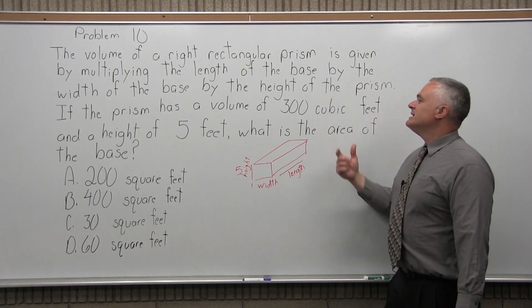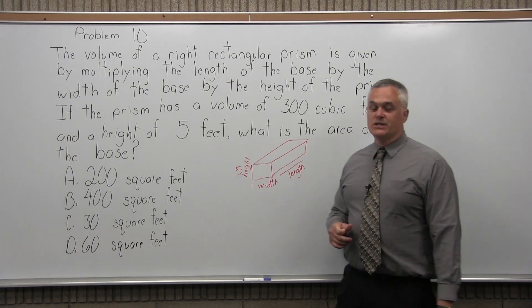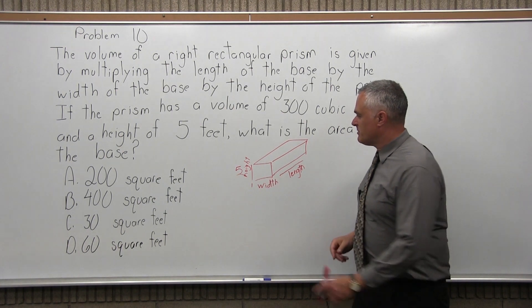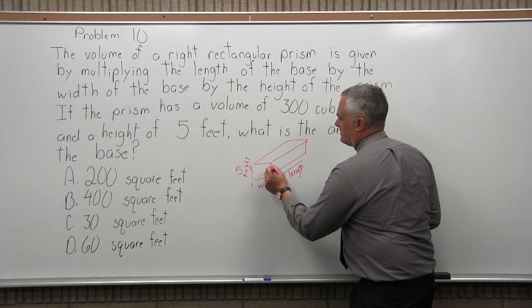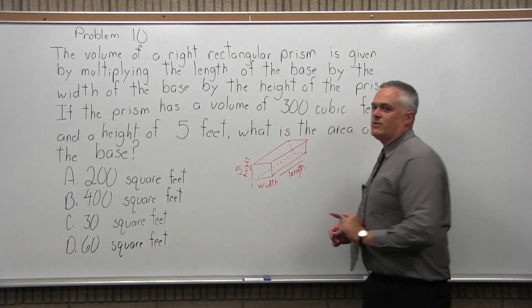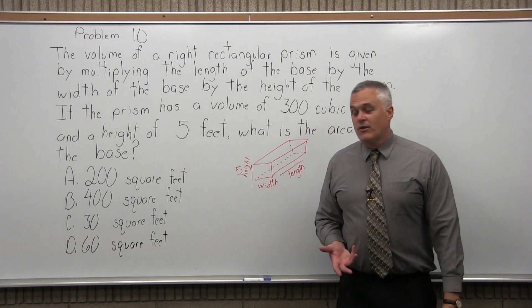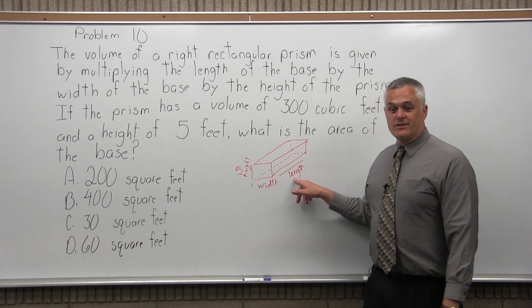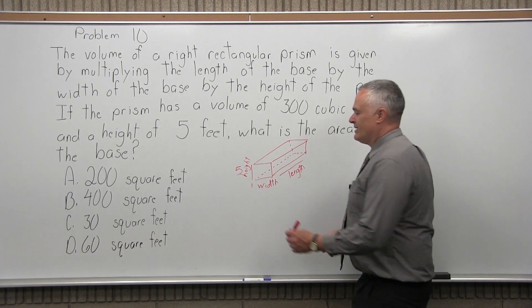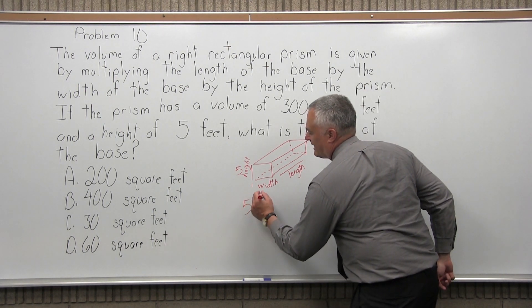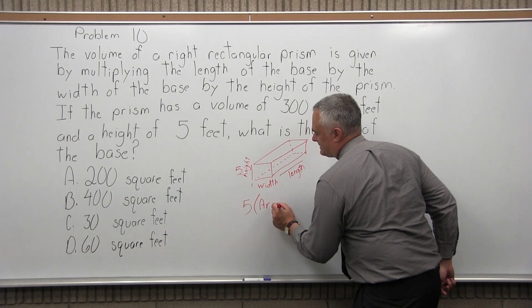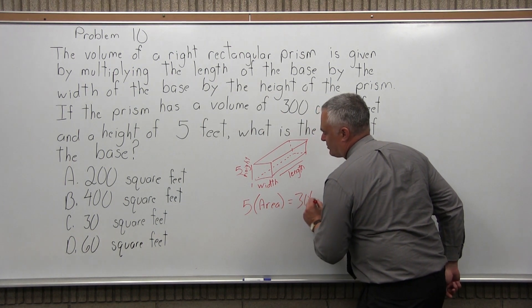And they're saying what is the area of the base? One of the things you have to realize first, the base is a rectangle. If you look at the shape the base would make, if you kind of pretend you could look through this, the base that it has is a rectangle. And the area of any rectangle is width times length. So if you go width times length times the height of 5, it comes out to 300. So 5 times the area of the base comes out to 300.